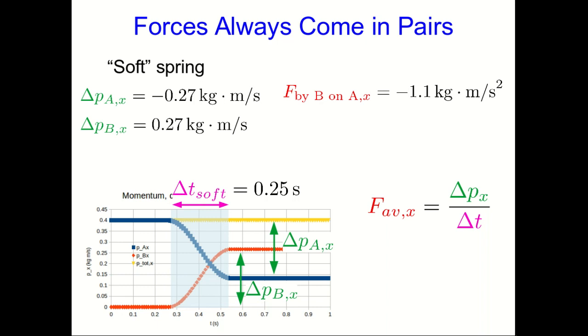Well, if you just plug these numbers through, you find that the force that cart B is exerting on cart A must be 1.1 kilogram meters per second squared in the negative x direction. And the force by A on B must be exactly the same magnitude pointing in the other direction. Well, that exactly the same magnitude isn't a coincidence.